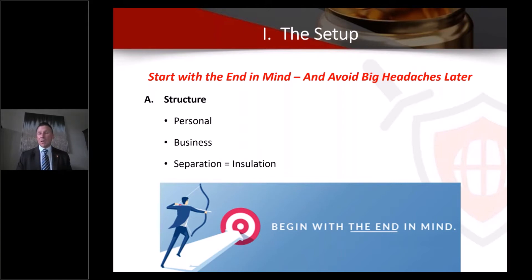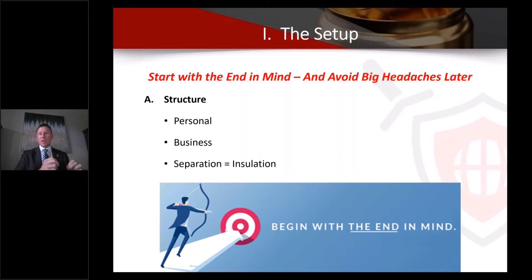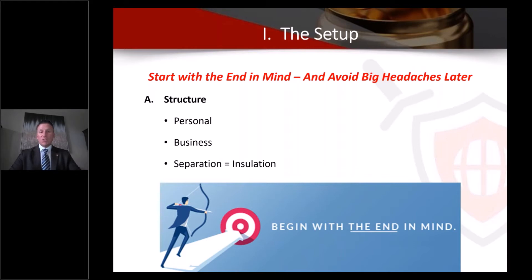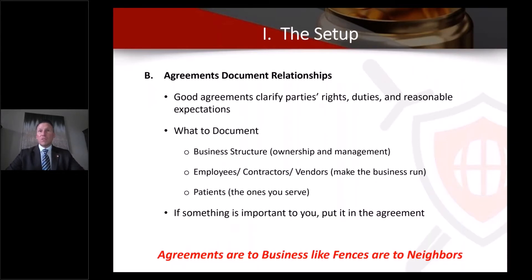On the business side, the same idea applies — you want to segregate different business operations. If you're a home healthcare business with different lines of care, maybe a DME division, you may want to set separate entities for different assets and operations. If there's a claim in one line of operations, it doesn't bring down the entire structure. This can be customized depending on your size and what you do, but please understand what is available.